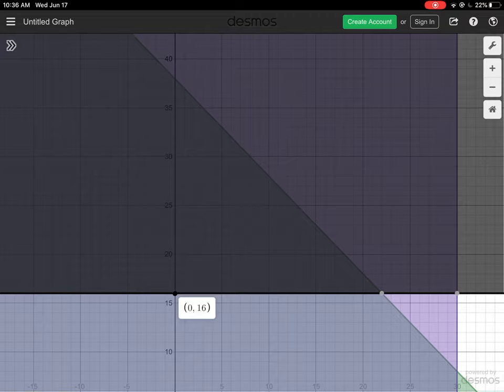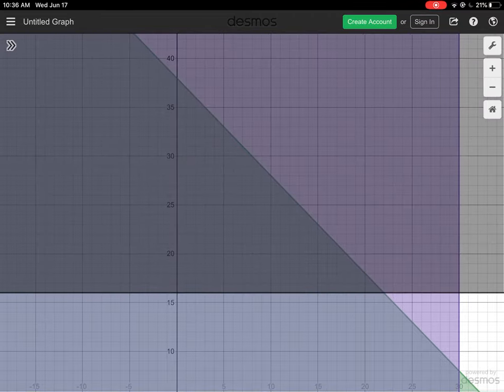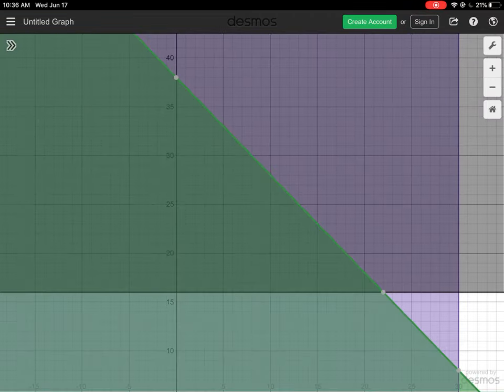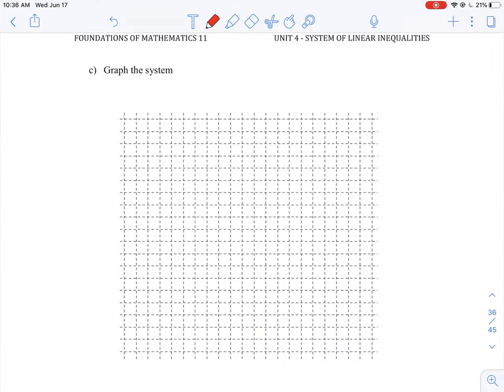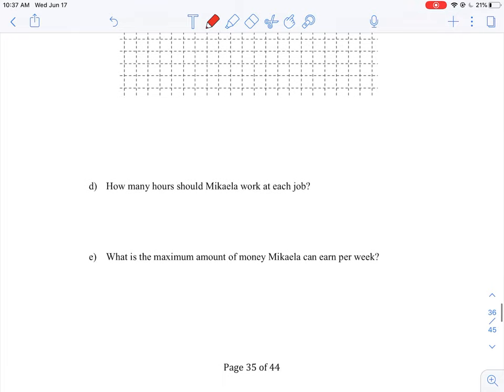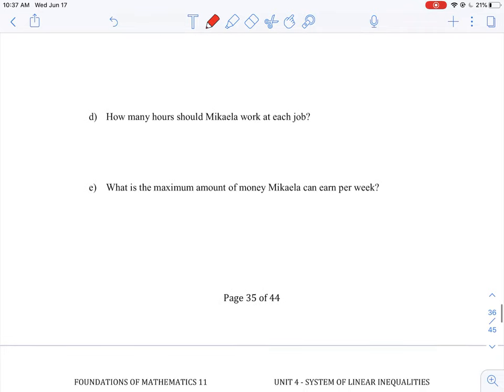So one of the points that we have is (0,16), the other point that we have here is (0,38), and then the other point here that's not on the axis is (22,16). So those are our three points that we are going to be looking at plugging into the graph to optimize. So if I go back to the question here, we do have our graph which we can just say plot on Desmos just because it'll be a little bit neater and more accurate. And then it says how many hours should Mikaela work at each job.